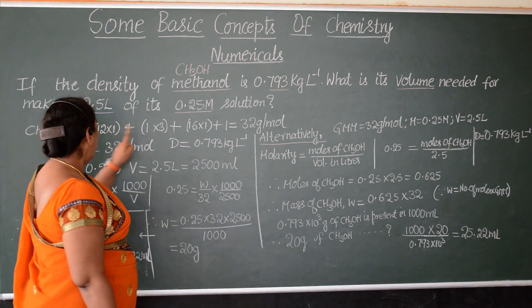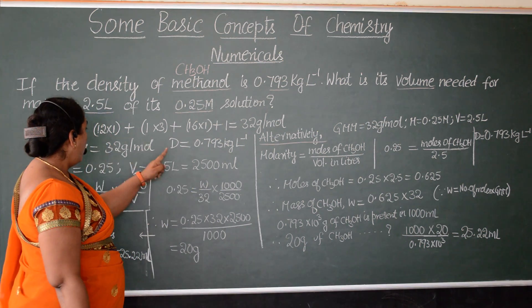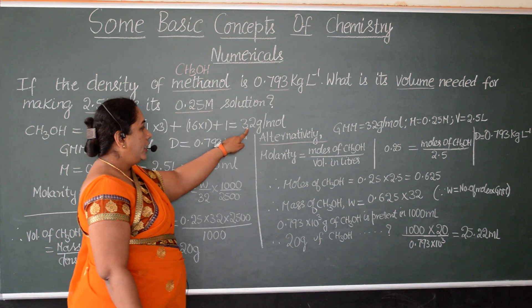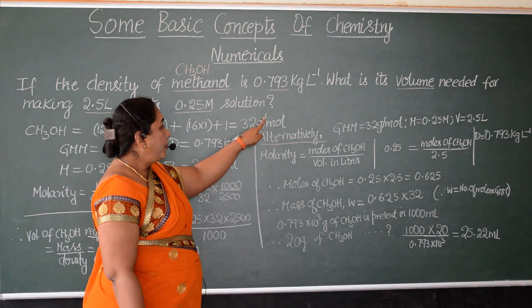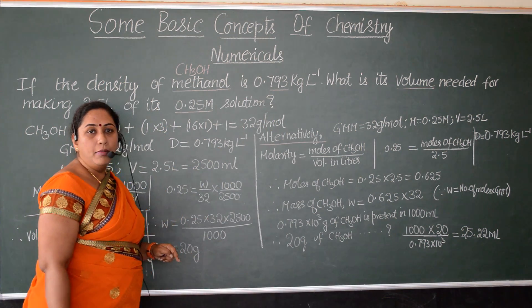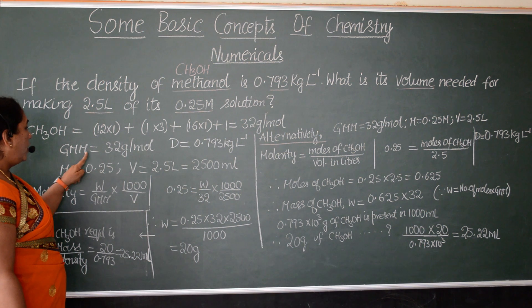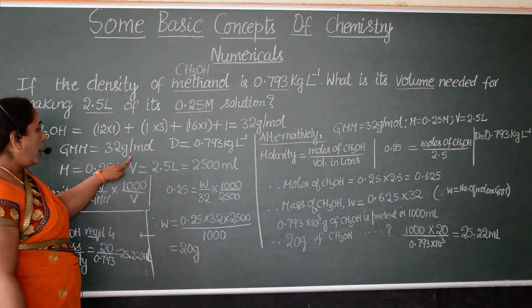Again, 1 hydrogen plus 1. So, when we add all of this, 12 plus 3 plus 16 plus 1, we get the value as 32 gram per mole. That is a molecular mass of methanol. So, GMM, gram molecular mass of methanol is 32 gram per mole.